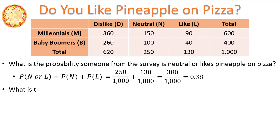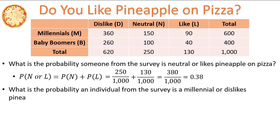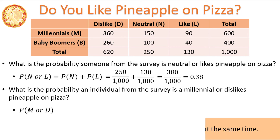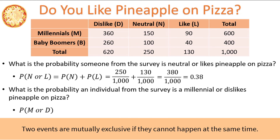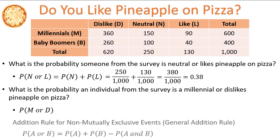Next, what is the probability an individual from the survey is a Millennial or dislikes pineapple on pizza? Again we have an OR probability, so we need to check whether or not the events are mutually exclusive. Are being a Millennial and disliking pineapple on pizza mutually exclusive? No — an individual can both be a Millennial and dislike pineapple on pizza, so we need to use the general addition rule, and not the one for mutually exclusive events.